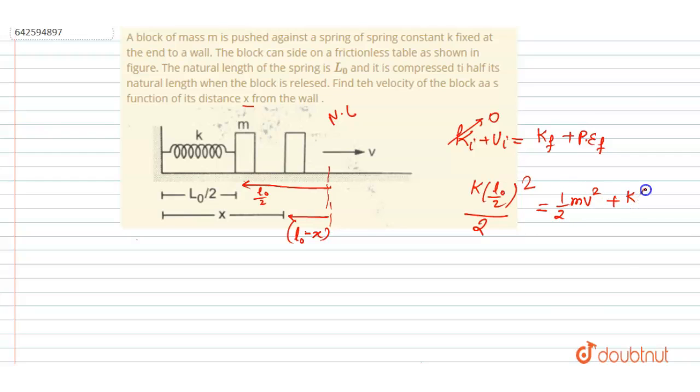So finally, potential energy will be K L0 minus x whole square by 2. Simple.